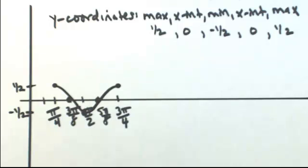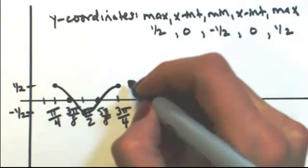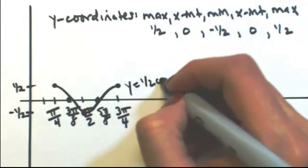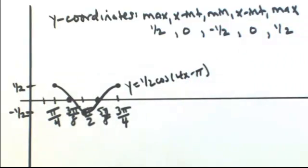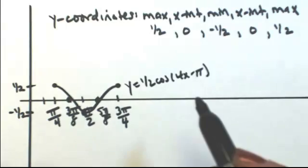So there's one cycle of this function. So this was y equals one-half cosine of four x minus pi. Now one thing I want to point out is that if I were to do a second cycle, let's say to the left,